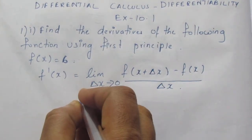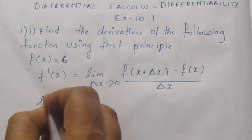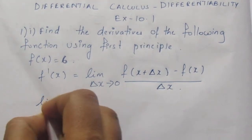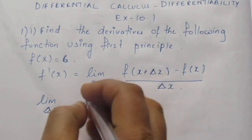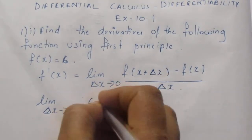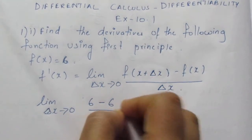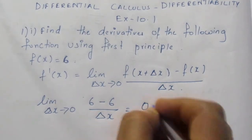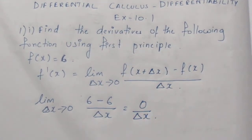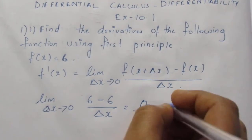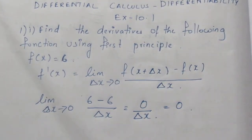So, limit delta x tends to 0, f of x plus delta x is 6, minus 6, divided by delta x — that gives us 0 divided by delta x. When the limit extends to 0, that is how we get 0. So the derivative equals 0.